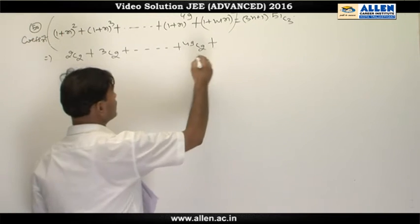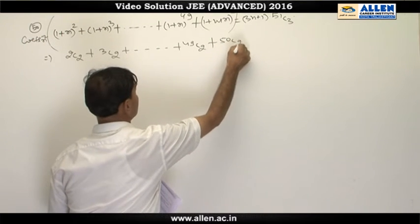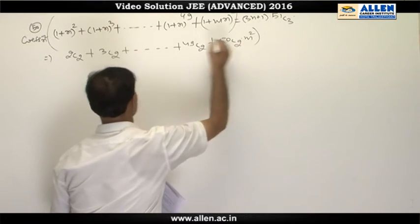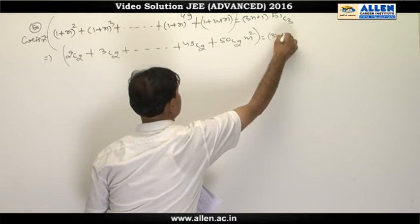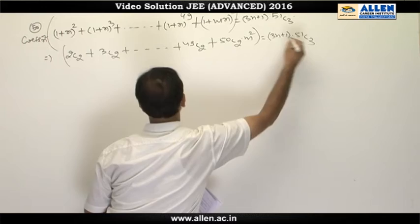and the last term coefficient of x² will be 50C2·m² and this is equal to (3n+1) times 51C3.